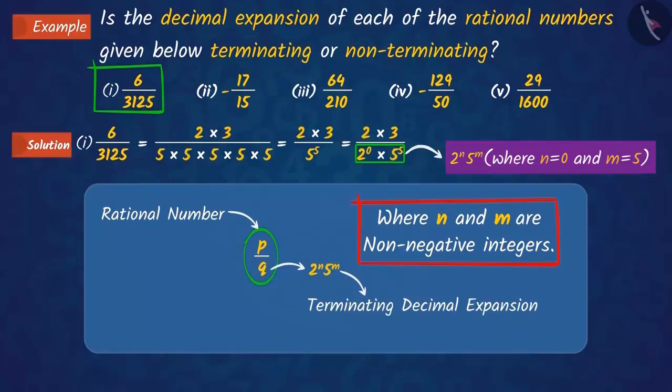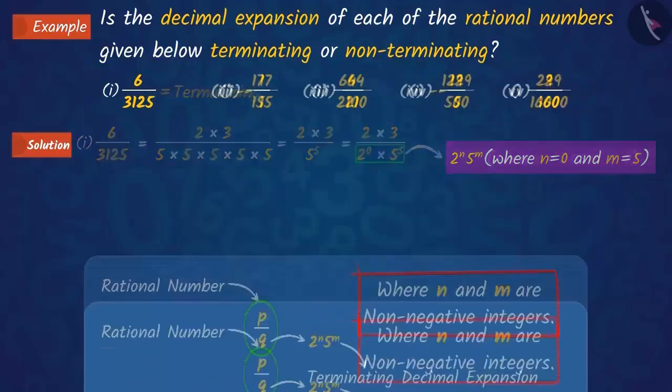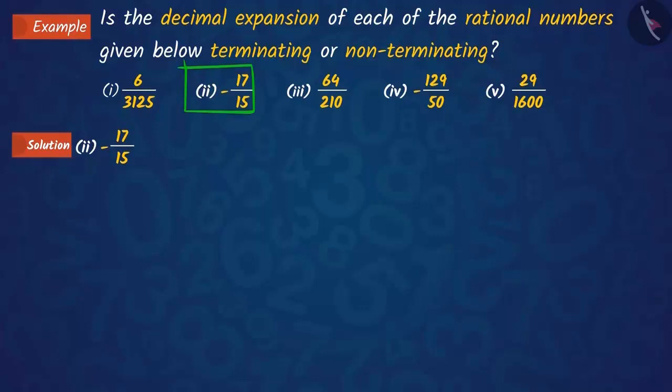So, the decimal expansion of this number is also terminating. Let us now discuss the second rational number, 17 upon 15. After analysing it, we see that the denominator is not in the form of 2 raised to n into 5 raised to m.